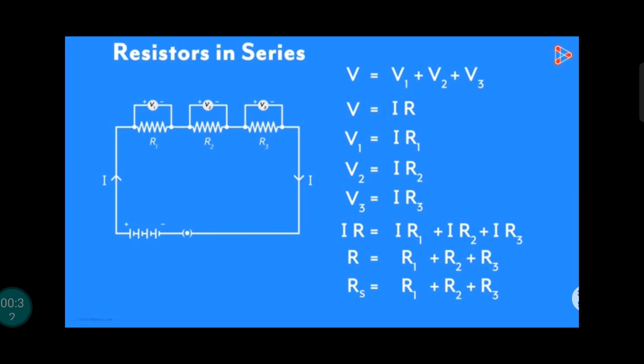The sum of the potential drop across each resistor V1 plus V2 plus V3 is equal to the potential across the battery. According to Ohm's law, V is equal to I into R.